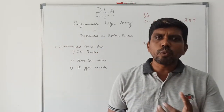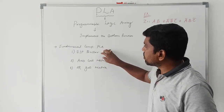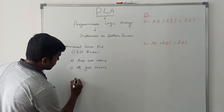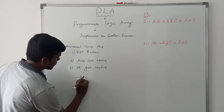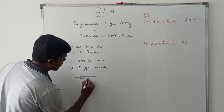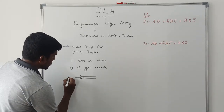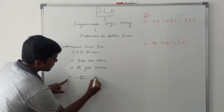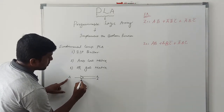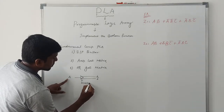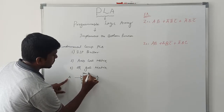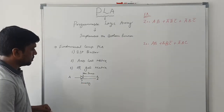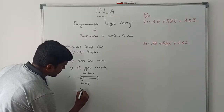The first component is the input buffer. A buffer is a temporary storage device. The input buffer gets the data and reduces the time to get the input values. The output of the input buffer gives both the inverting input and the non-inverting input. For example, if A is the input, the output of the buffer is A and A bar — A bar is the inverting term and A is the non-inverting term.